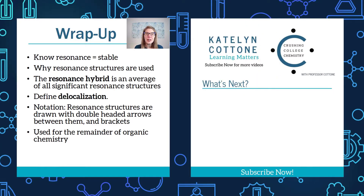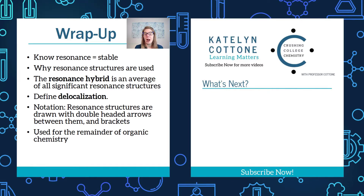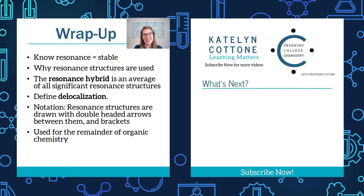Let's wrap up. In this video, we started talking about resonance. What you want to know is that resonance is a stabilizing effect — we call it resonance stabilized or resonance stabilization. We talked about why resonance structures are used and learned the words delocalized or delocalization, as well as localized. Make sure you know the proper notation for resonance structures: draw them with double-headed arrows between the structures and within brackets. This concept is going to be huge for the remainder of organic chemistry, so spend a significant amount of time on resonance. Thanks for your attention — I'll see you in the next resonance video. This is Katoni, signing out.